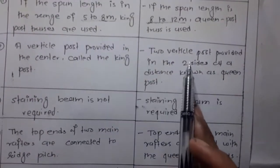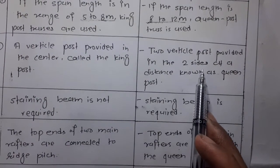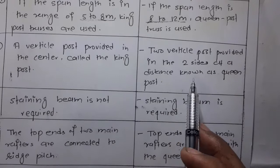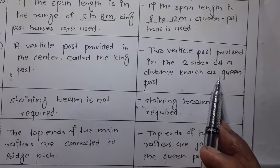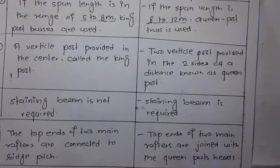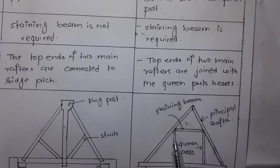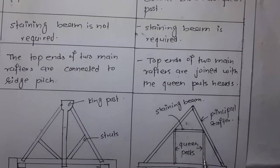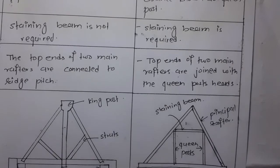In queen post truss, two vertical posts are provided on the two sides at a distance. These two vertical posts are known as the queen posts.